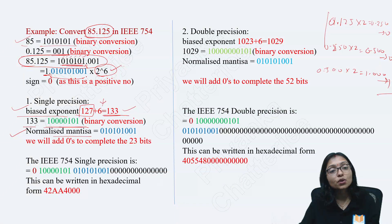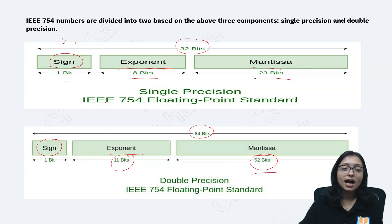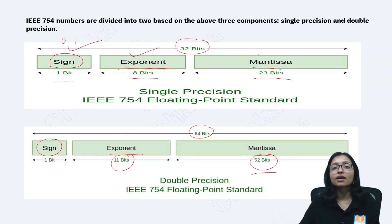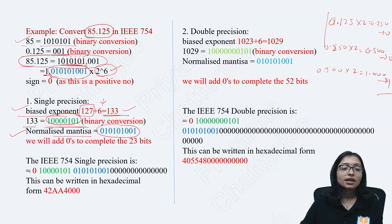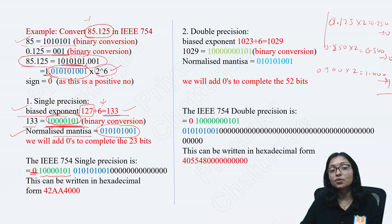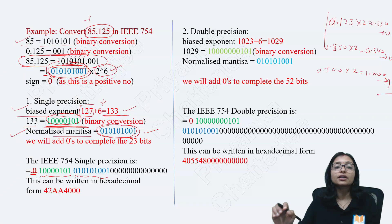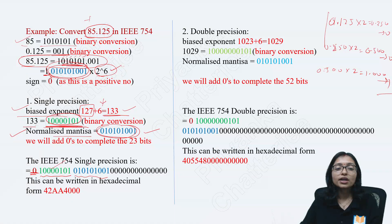The normalized mantissa is the blue color. This blue color is your normalized mantissa. The green color is your biased exponent. Together you are writing in this format: first bit is sign bit, after that exponent, after that mantissa. The sign bit is 0 because it is a positive number. Here you write the exponent part — that is the green color. After that the mantissa part — that is the blue color.